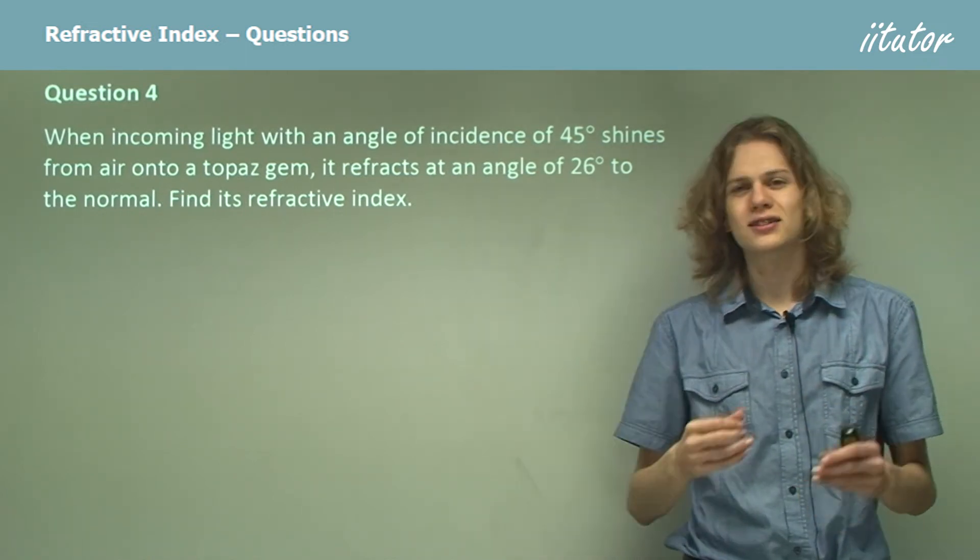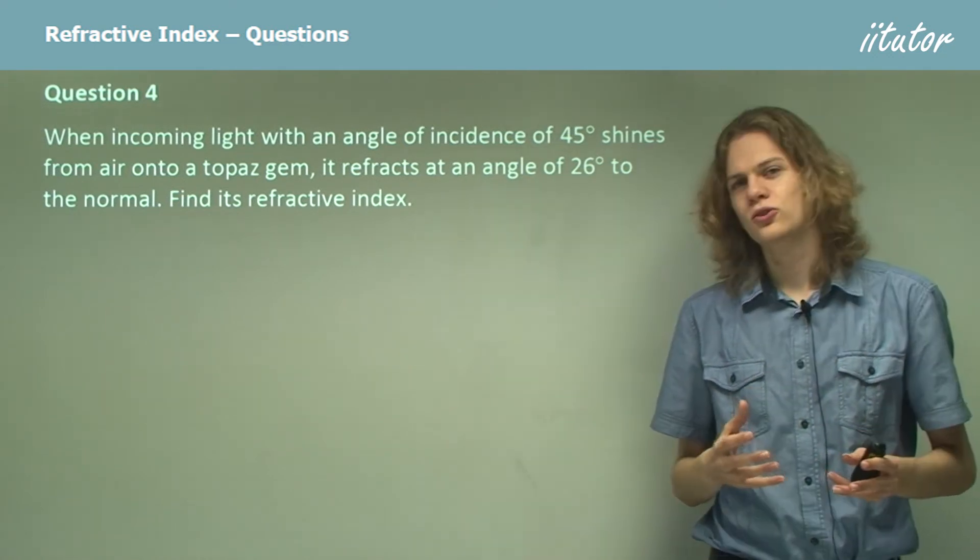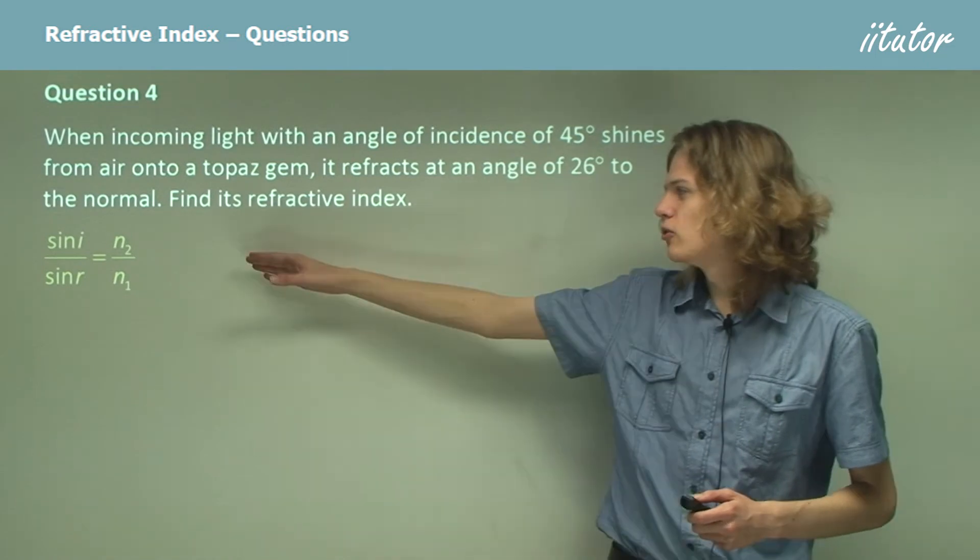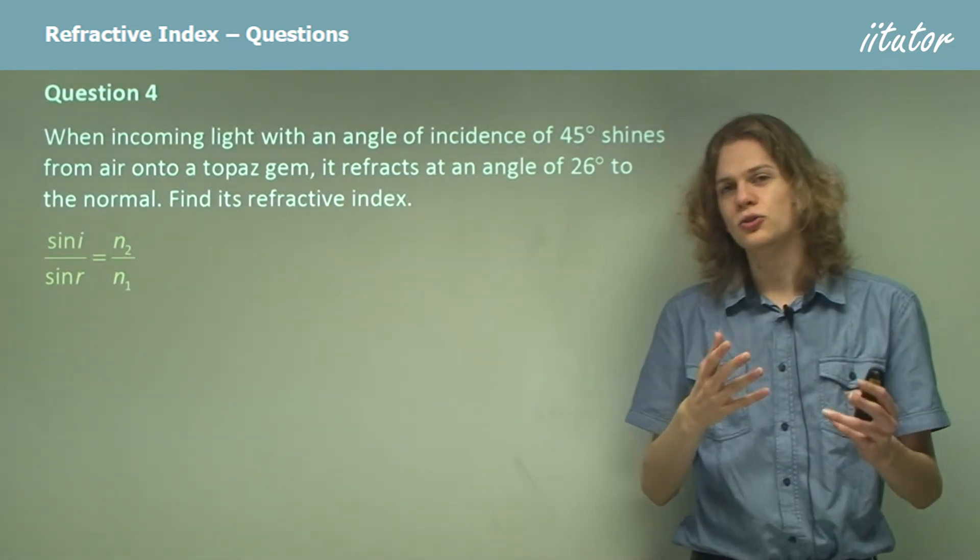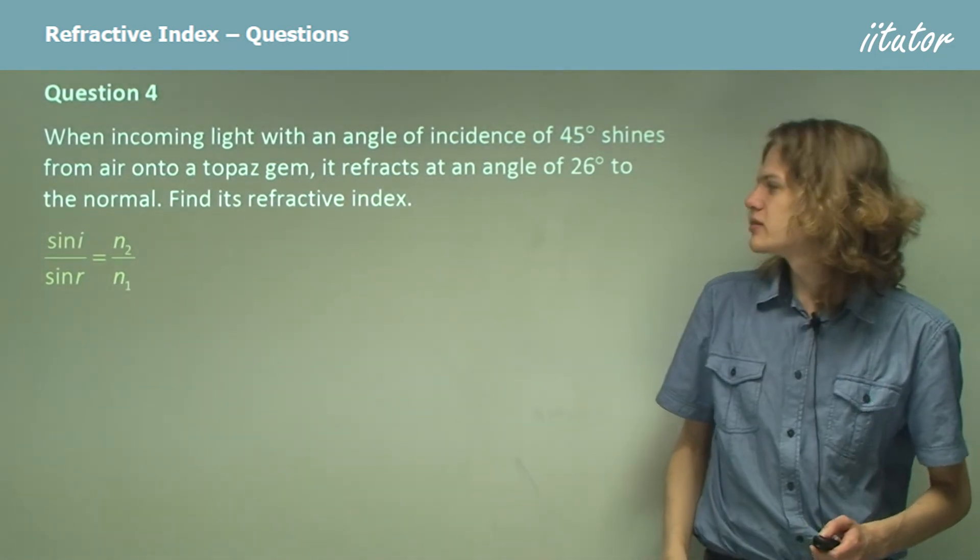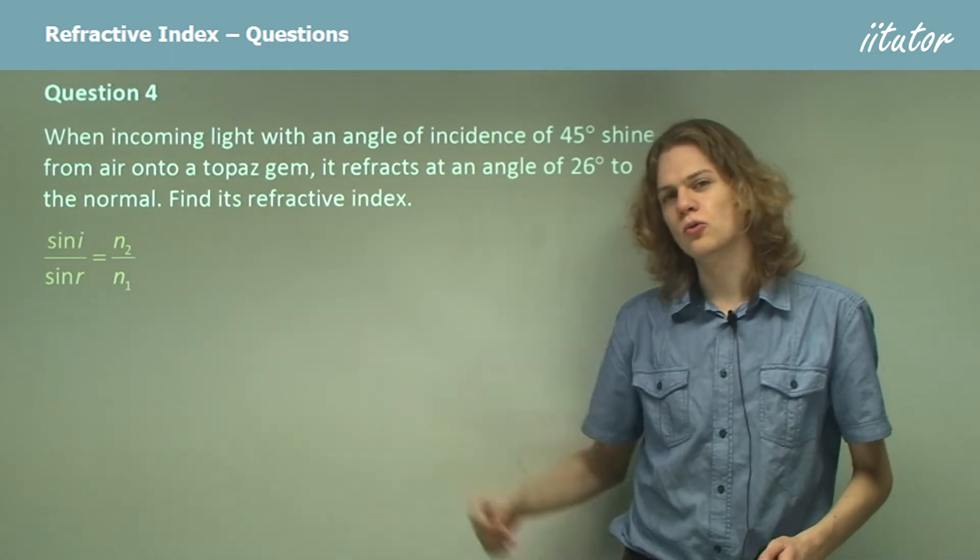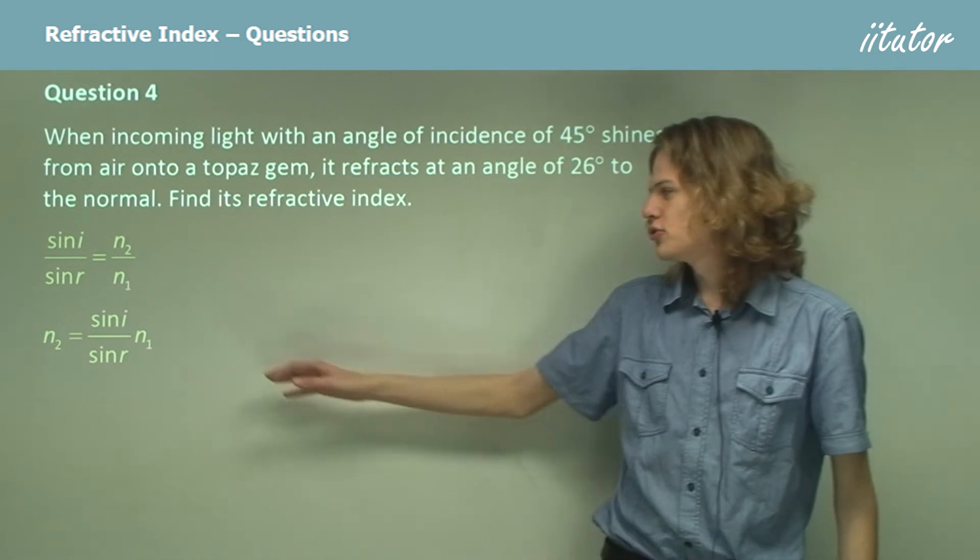We use Snell's law, which relates the angles of incidence and refraction to the refractive indices of the two materials. That is, sine i over sine r equals N2 over N1. In this case, we want to figure out N2, so we need to make N2 the subject of the equation. All we need to do is multiply both sides by N1.